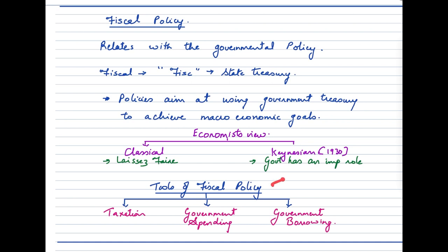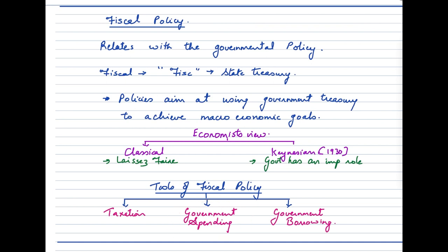When we talk about the tools of fiscal policy, there are three. First is taxation, where we focus on two types: direct and indirect. Second is government spending — there are various ways in which a government would want to spend. Third is borrowings made by the government, also called government or public borrowing.